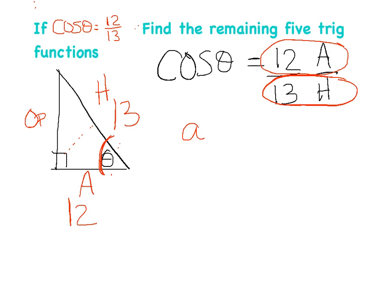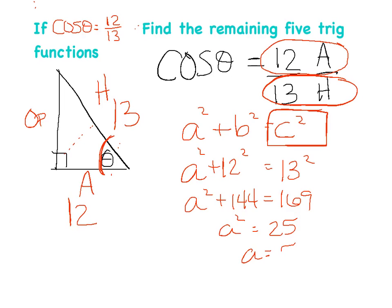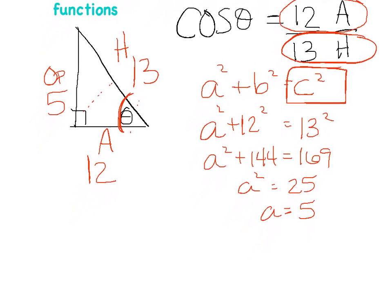Use the Pythagorean theorem: a² + 12² = 13², so a² + 144 = 169, giving a² = 25, and a = 5 (positive, since it's a side length). Now all three sides are labeled: opposite = 5, adjacent = 12, hypotenuse = 13.